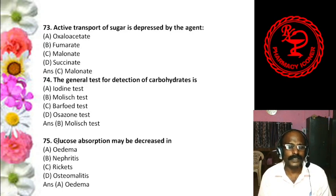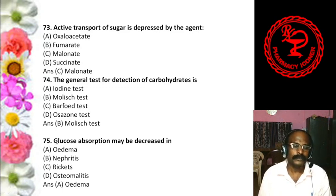Question 22: Which of the following amino sugars is present in the bacterial cell wall? Options: A. N-acetylmuramic acid, B. Sialic acid, C. Aminoglycoside, D. Azide. The answer is A, N-acetylmuramic acid, which is present in the bacterial cell wall.